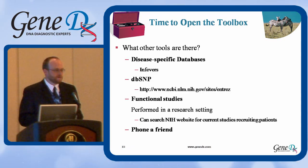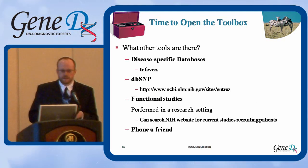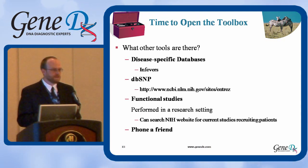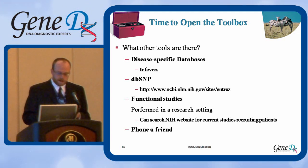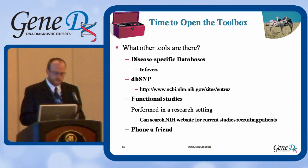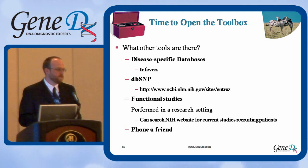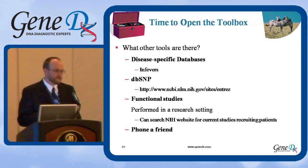There are disease-specific mutation databases. One example is the InFevers database, where they put in mutations identified in hereditary periodic fever syndromes. There are others out there, such as dbSNP, which is available through NCBI. There are also functional studies — I would always check the NIH website to see if there's anyone offering functional studies for variants of unknown significance for specific genes.